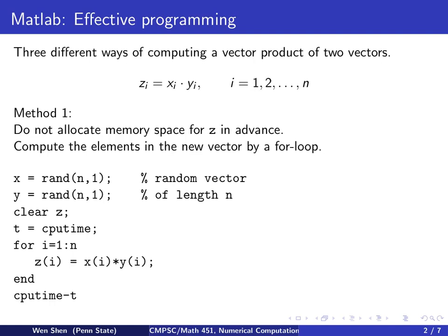So what we do, let's generate a random vector for x and a random vector for y with length n. I will clear z to make sure z is not previously existing. And this command here, CPU time, means that from now I'll start to count the CPU time, and it will end here.